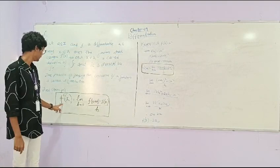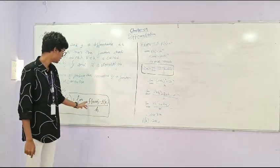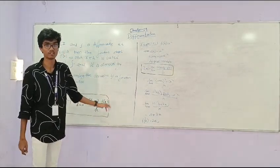The general form of first principle is f dash of x equal to limit h tends to zero, f of x plus h minus f of x by h.